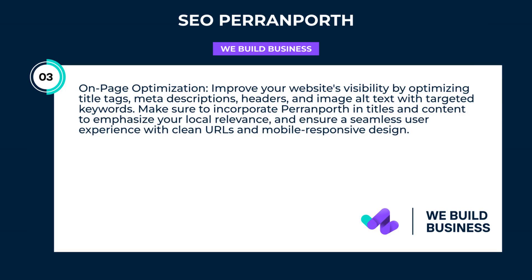On-page optimization. Improve your website's visibility by optimizing title tags, meta descriptions, headers, and image or text with targeted keywords. Make sure to incorporate Perimporth in titles and content to emphasize your local relevance and ensure a seamless user experience with clean URLs and mobile responsive design.